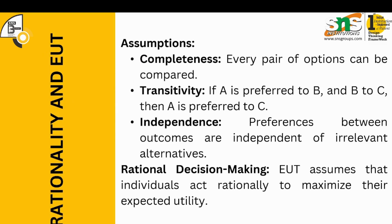Comparing EUT with rational decision making: EUT assumes that every pair of options can be compared. It strongly believes that any set of options will have a comparison with respect to utility. If A is preferred to B and B to C, then A is preferred to C — for example, if I prefer tea over coffee and coffee over Horlicks, then I obviously prefer tea to Horlicks. Preferences between outcomes are also independent of irrelevant alternatives.